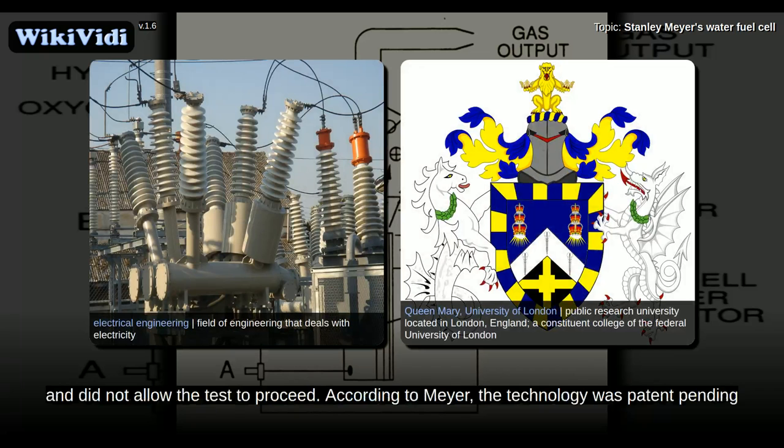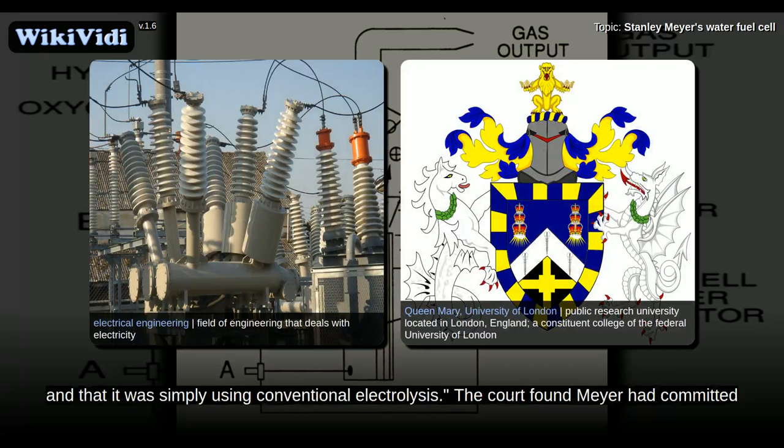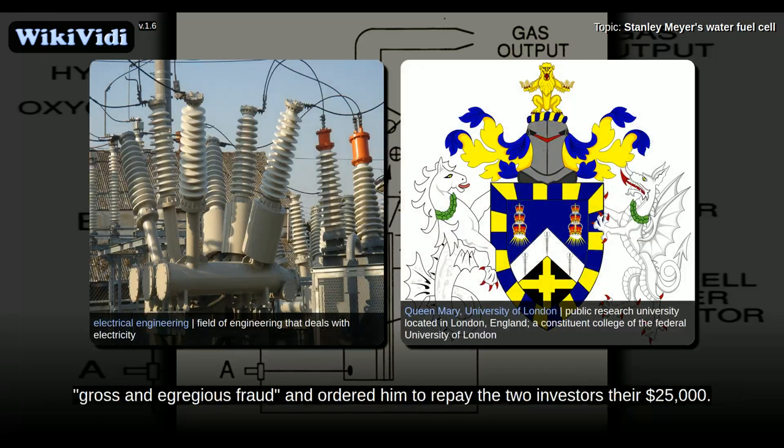According to Meyer, the technology was patent pending and under investigation by the Patent Office, the Department of Energy, and the military. His water fuel cell was later examined by three expert witnesses in court who found that there was nothing revolutionary about the cell at all, and that it was simply using conventional electrolysis. The court found Meyer had committed gross and egregious fraud and ordered him to repay the two investors their $25,000.